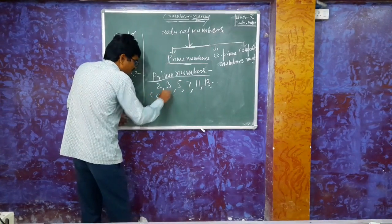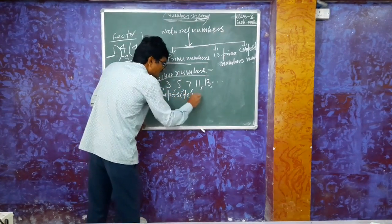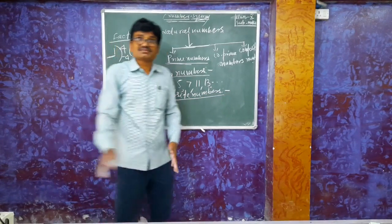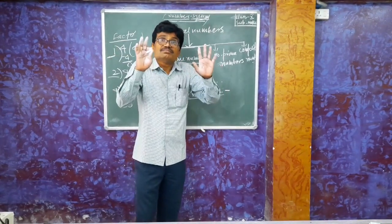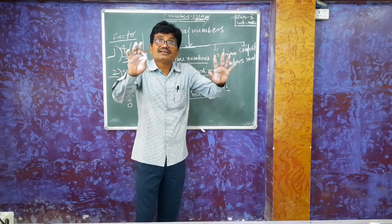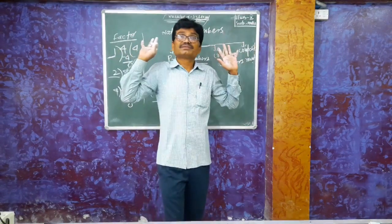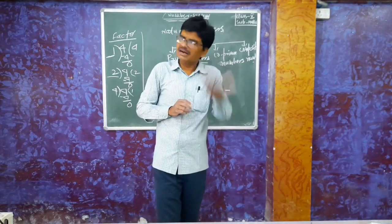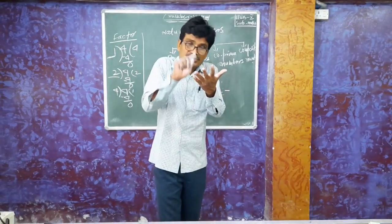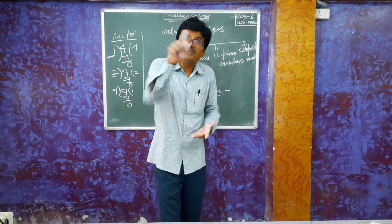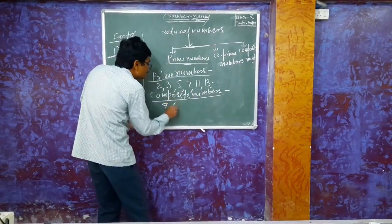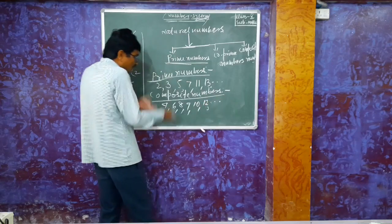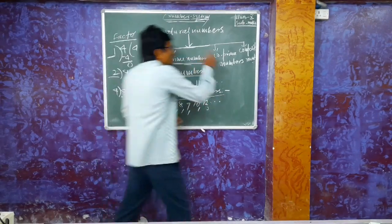A composite number is a natural number which has more than two factors, other than just one and the number itself. For example, 4 has three factors: 1, 2, and 4 itself. So 4, 6, 8, 9, 10, 12 — all these are composite numbers.